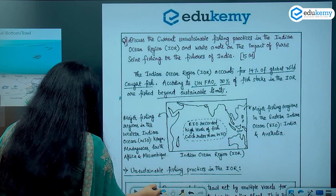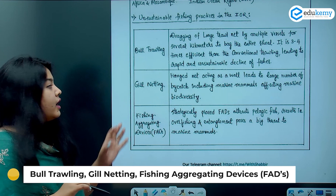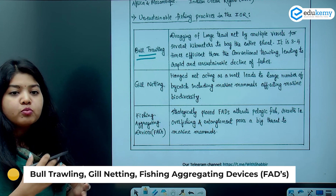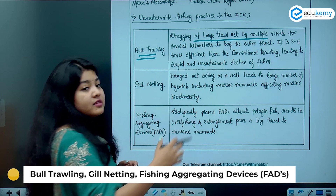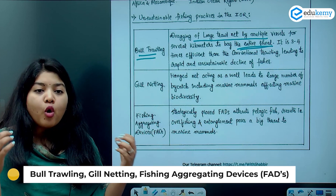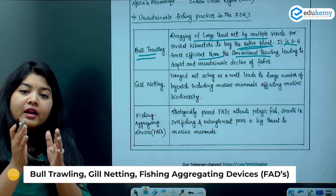A better way to present the unsustainable fishing practices is in the form of a table — the same information is given but within the word limit and easy to read. The first method is bull trawling, or bottom trawling. You drag a large trawl net by multiple vessels for several kilometers, bagging the entire shoal — the entire harvest and biodiversity in that region. It is three to four times more efficient than general trawling and leads to a rapid and unsustainable decline of fisheries.